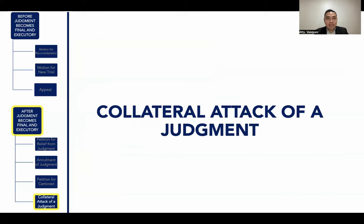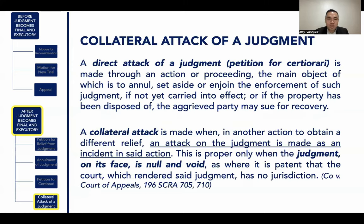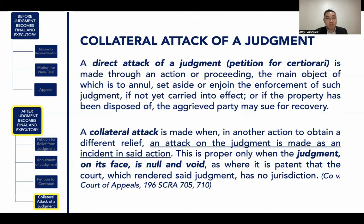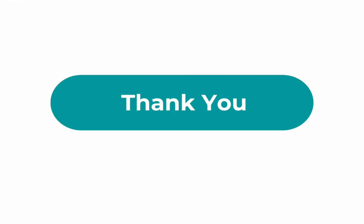The last remedy after judgment becomes final and executory is a collateral attack on a judgment. A direct attack of a judgment — for example, the filing of a petition for certiorari — is made through an action or proceeding the main object of which is to annul, set aside, or enjoin the enforcement of such judgment; if the property has been disposed of, the aggrieved party may sue for recovery. A collateral attack is made when, in another action to obtain a different relief, an attack on the judgment is made as an incident in that action, and this is proper only when the judgment on its face is null and void, as where it is patent that the court which rendered the judgment had no jurisdiction. This ends our discussion on post-judgment remedies.